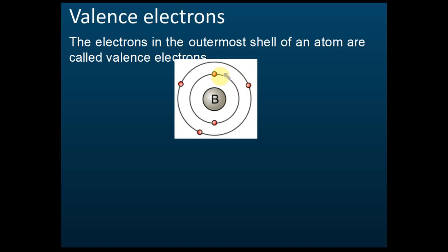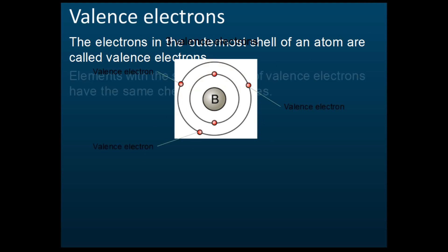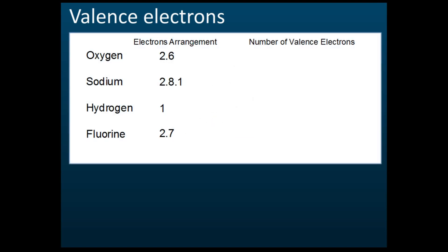So this one has three valence electrons — that's right. For oxygen with arrangement 2,6, the number of valence electrons is six. This one has six valence electrons, another has one valence electron, and this one with arrangement 2,7 has seven valence electrons.